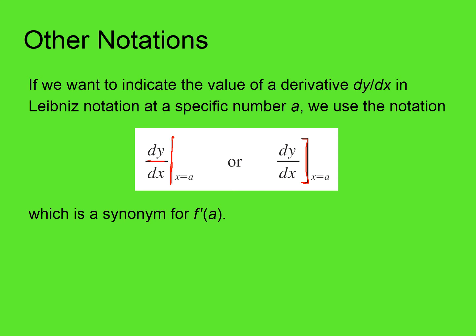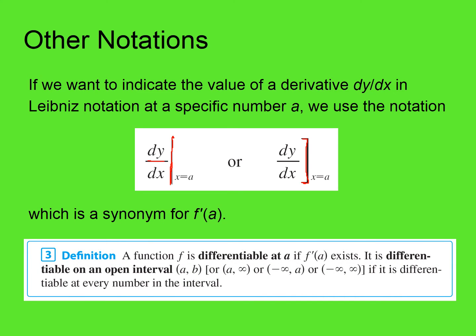Here's an important definition, which won't seem important at first. A function f is differentiable at a if f prime of a exists. It is differentiable on an open interval (a, b) if it is differentiable at every number in the interval. So sometimes you'll have to decide where or if a function is differentiable at a particular number — you have to ask yourself, does f prime of a exist?